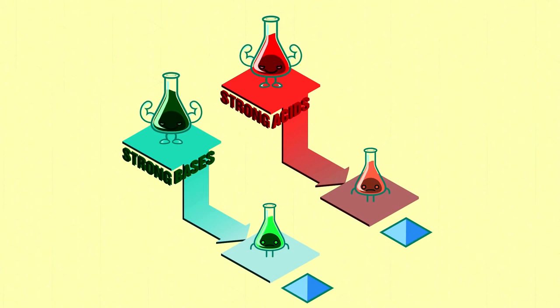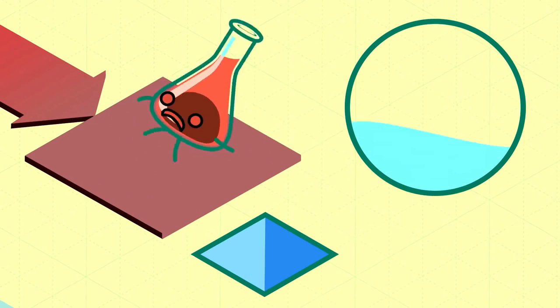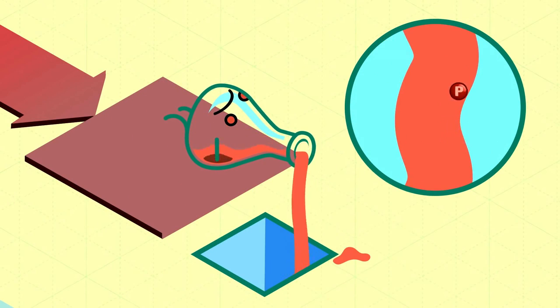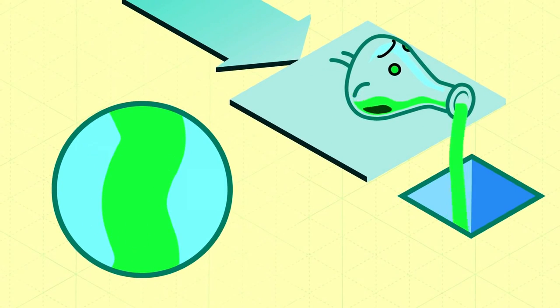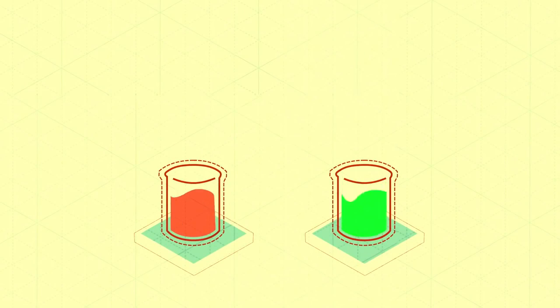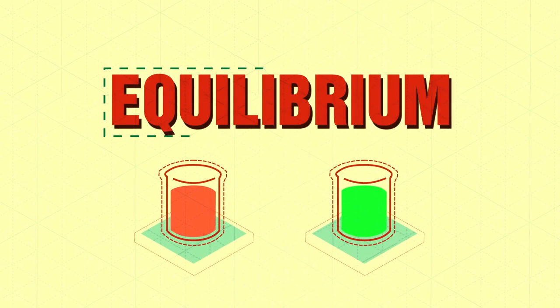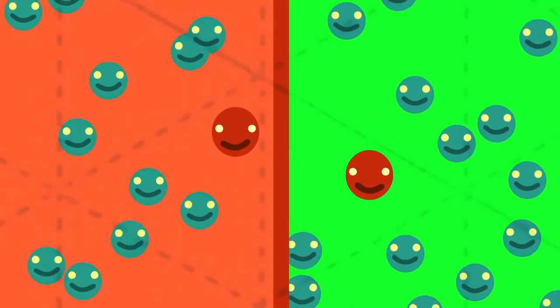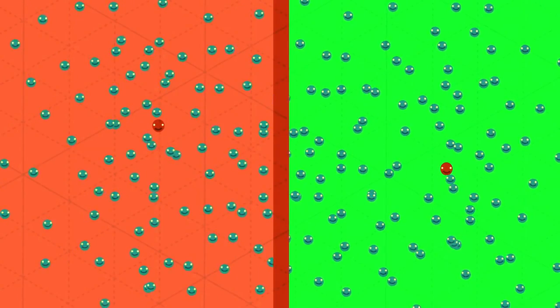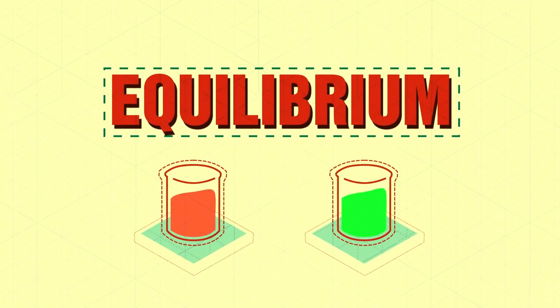Other acids and bases are not so strong. They may donate just a few of their protons to water, or accept just a few protons from water, but most of their molecules stay exactly the same. If left alone in water, they'll reach some equilibrium point, where maybe only 1 out of 100 or 1 out of 10,000 of their molecules has exchanged currency with water.